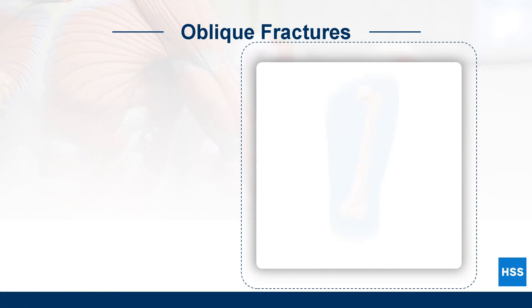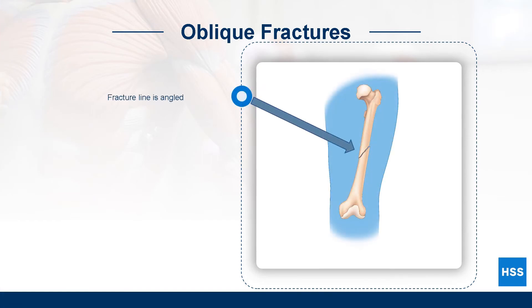An oblique fracture shows a diagonal or angled fracture line. This type of fracture may be the result of a forceful twist on the bone or an impact to the side of the bone at a sharp angle.